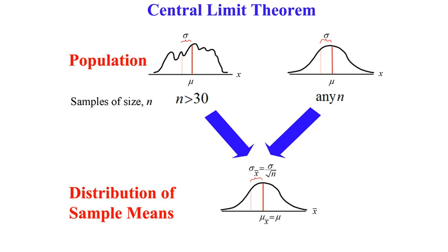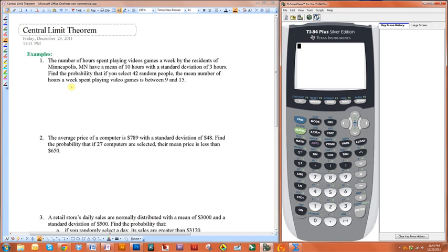Before you proceed to the examples, please review the Central Limit Theorem. The Central Limit Theorem is used to determine probabilities whenever you are looking at samples and the mean of the sample. To be able to use the Central Limit Theorem, a few things have to happen.